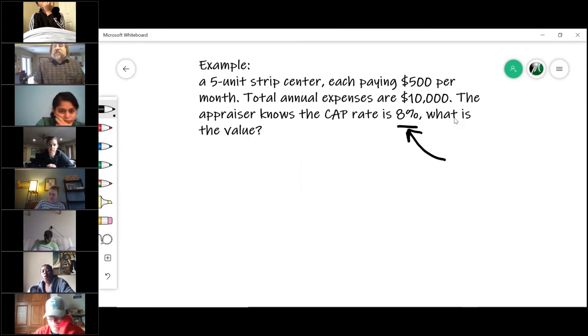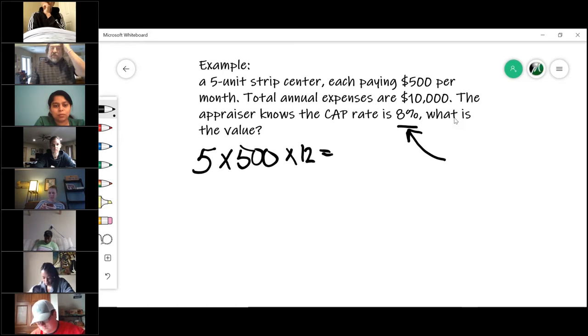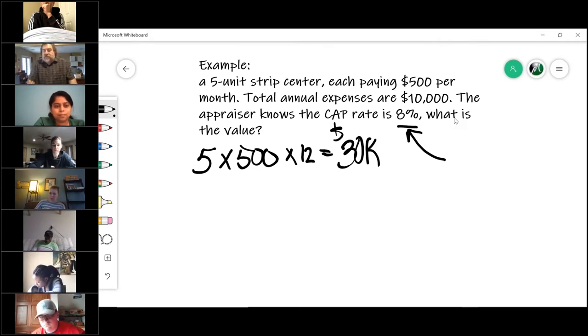That is the gross income minus the expenses. So what's the gross income? Five units times $500 per month times 12 months, remember, if I've done my math right, is $30,000.